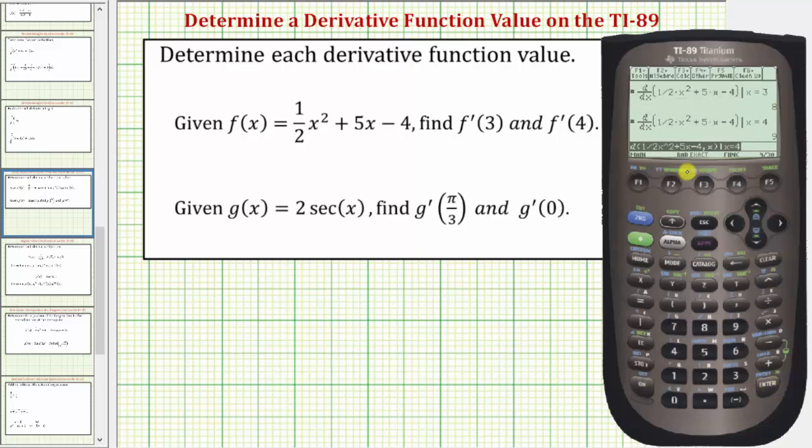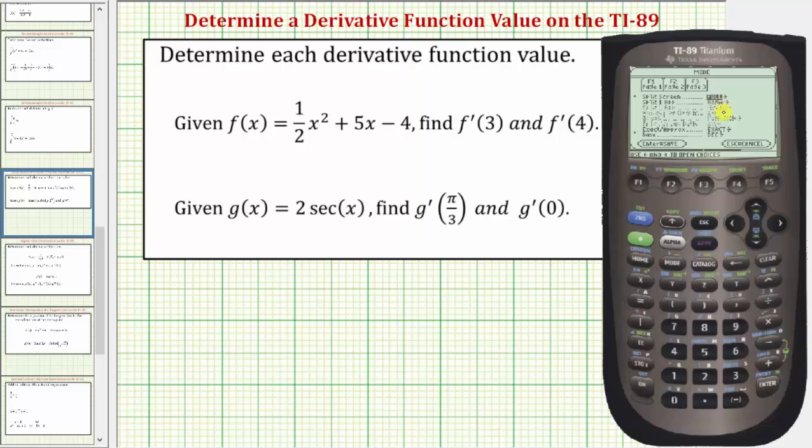To change to exact mode or automatic mode, press MODE, F2 for page 2, and then down toward the bottom, notice it says EXACT. If it didn't, press the right arrow, select AUTO or EXACT, press enter, and then enter again.